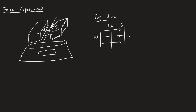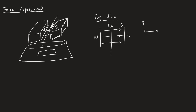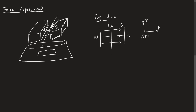We can set up a Fleming's left-hand rule system to see which direction the force is going to act in. B is going in this direction, I is going in this direction, which actually means the force here is going to go down into the screen. This means the force of this wire is then going to push down onto the scales, and so the reading of the scales is going to increase.